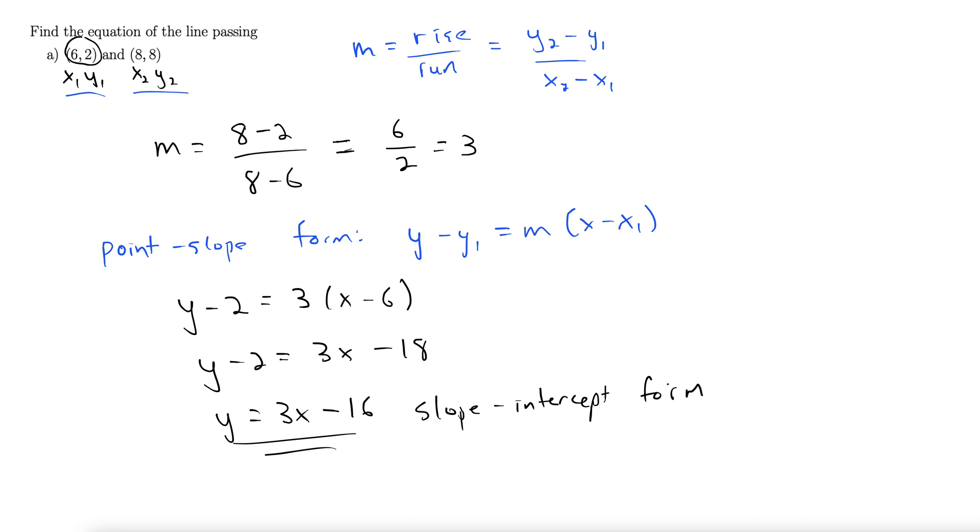This is usually how you present a line. If you found a line, you want to share the answer with the world, you put it in slope-intercept form. Every once in a while, it asks for standard form. It's not that hard. Let's just subtract the 3x from both sides.